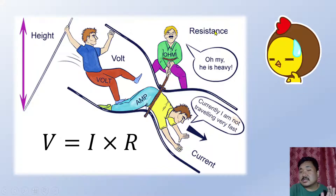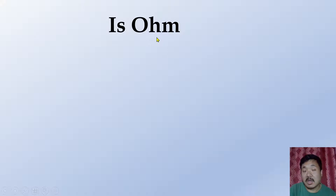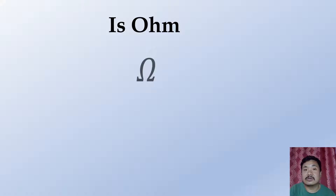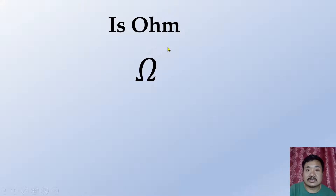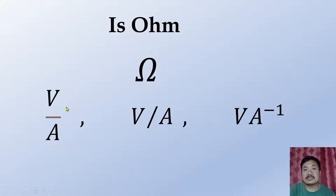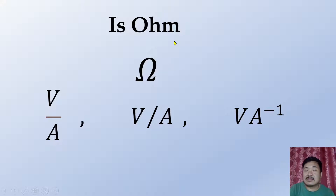Resistance is a physical quantity. Its SI unit is Ohm. The symbol for Ohm is Ω — that is the omega symbol, a Greek letter. So the SI unit of resistance is Ohm (Ω). Another equivalent unit is volt per ampere.